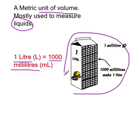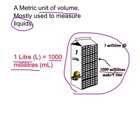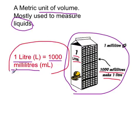Here we have one litre of orange juice. If you can see, there are all these tiny little squares — 1000 millilitres make up this one litre of orange juice. So remember that one litre equals 1000 millilitres.